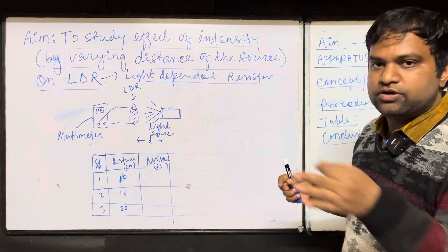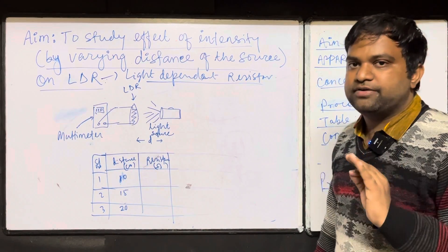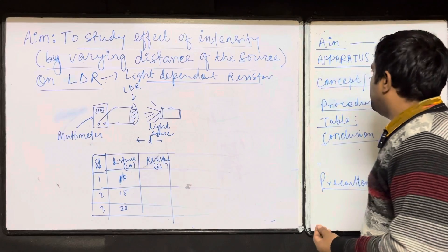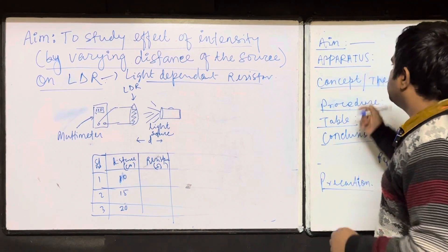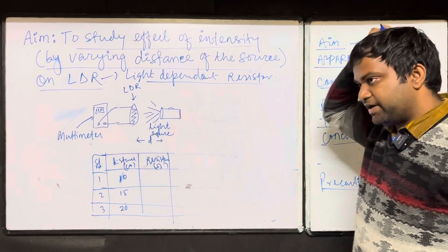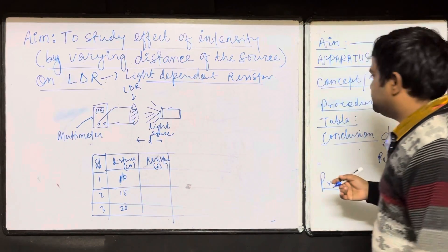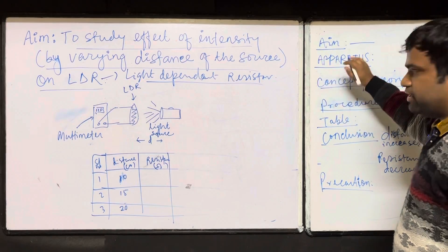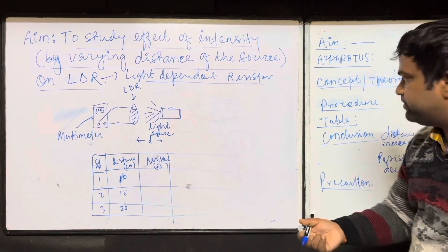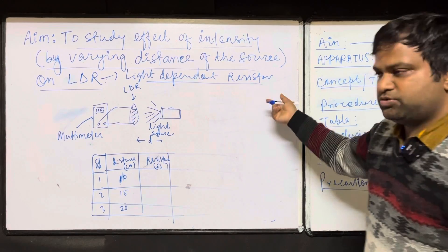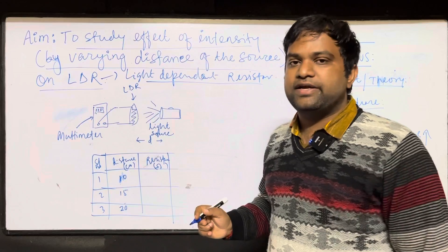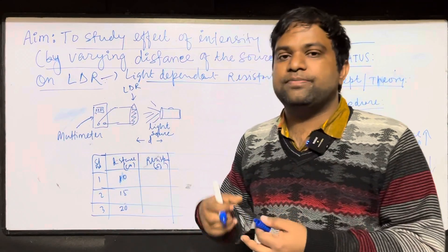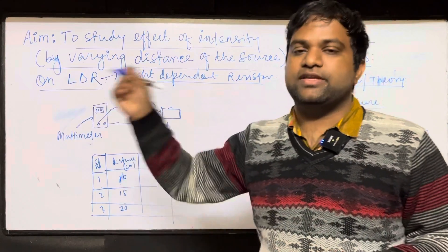How will you write the activity? Just have a look, because in the last videos I have not explained in detail. First, you will write the Aim. Remember, 3 marks are there for your notebook and Viva. Then write Apparatus, like you write in an experiment. Then write the Concept or Theory — what is an LDR — just 2-3 lines. In the experiment you write elaborately, but here just 2-3 lines: LDR is a light dependent resistance whose resistance depends upon the intensity of light. Give 2-3 examples of its use.